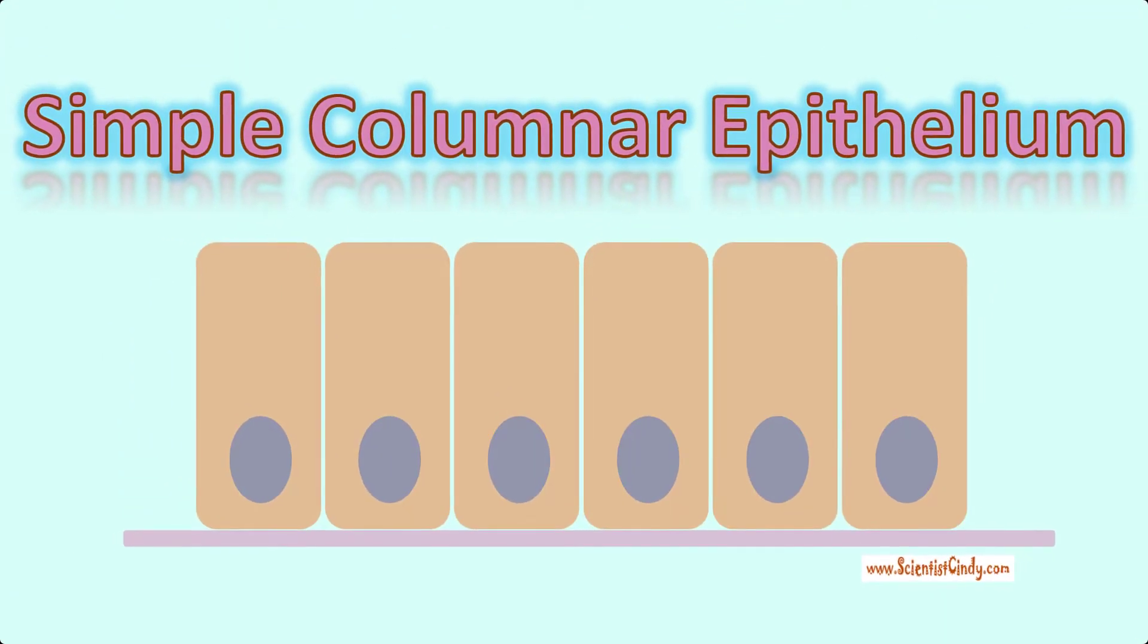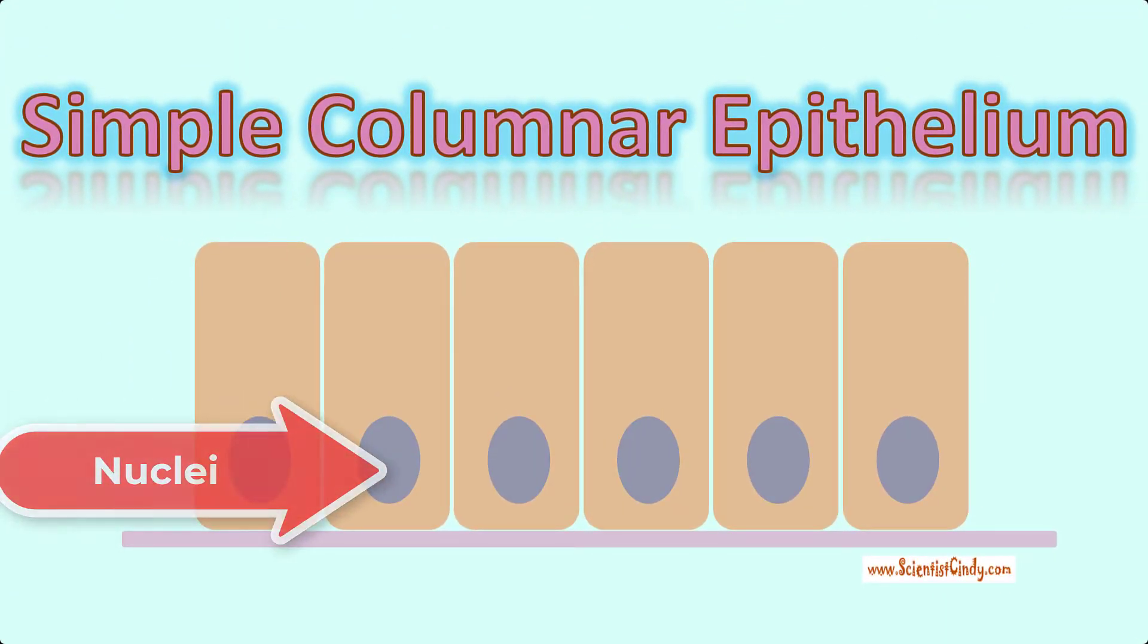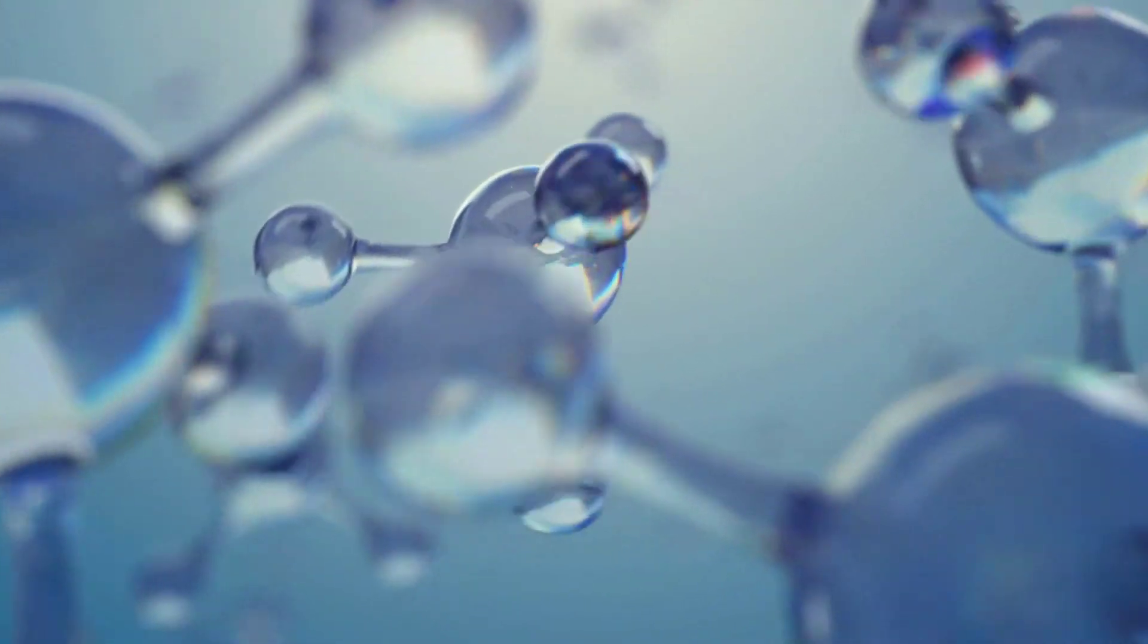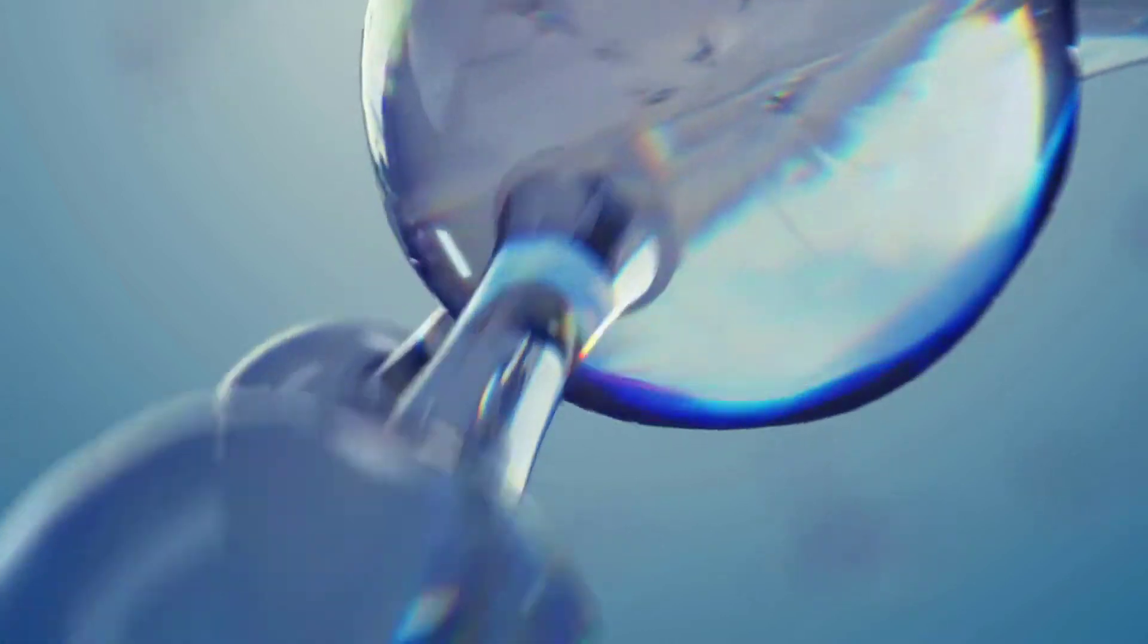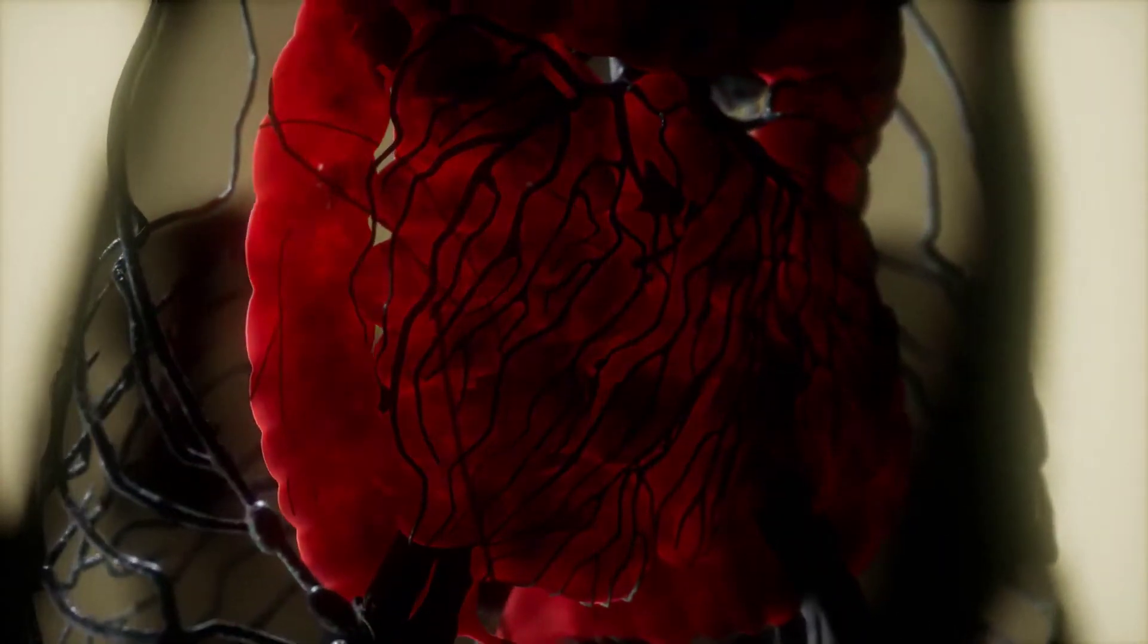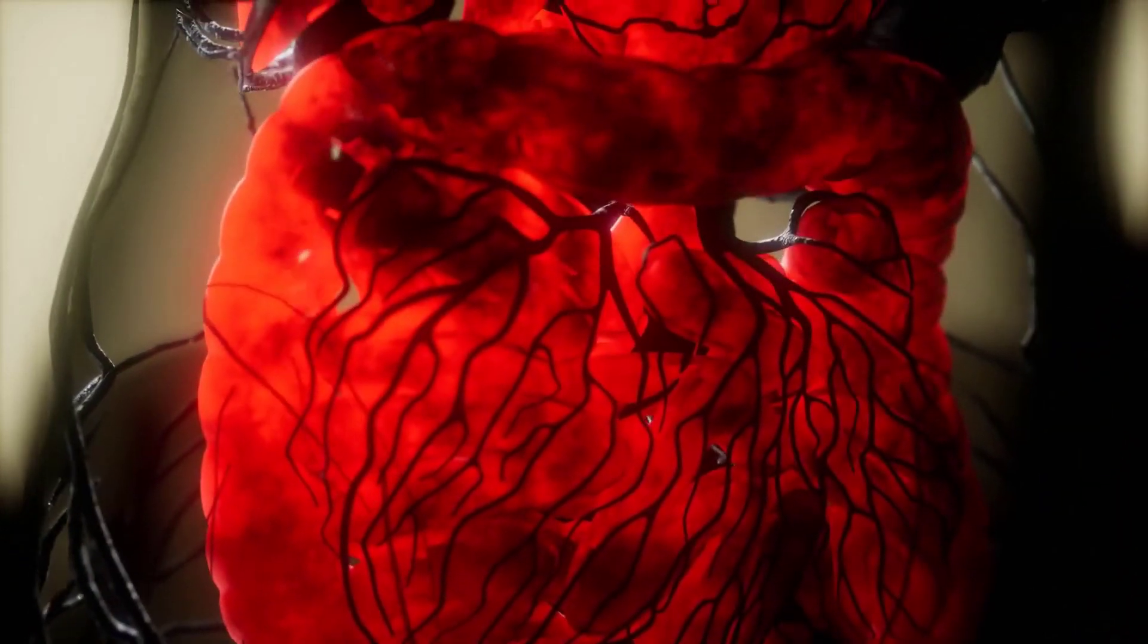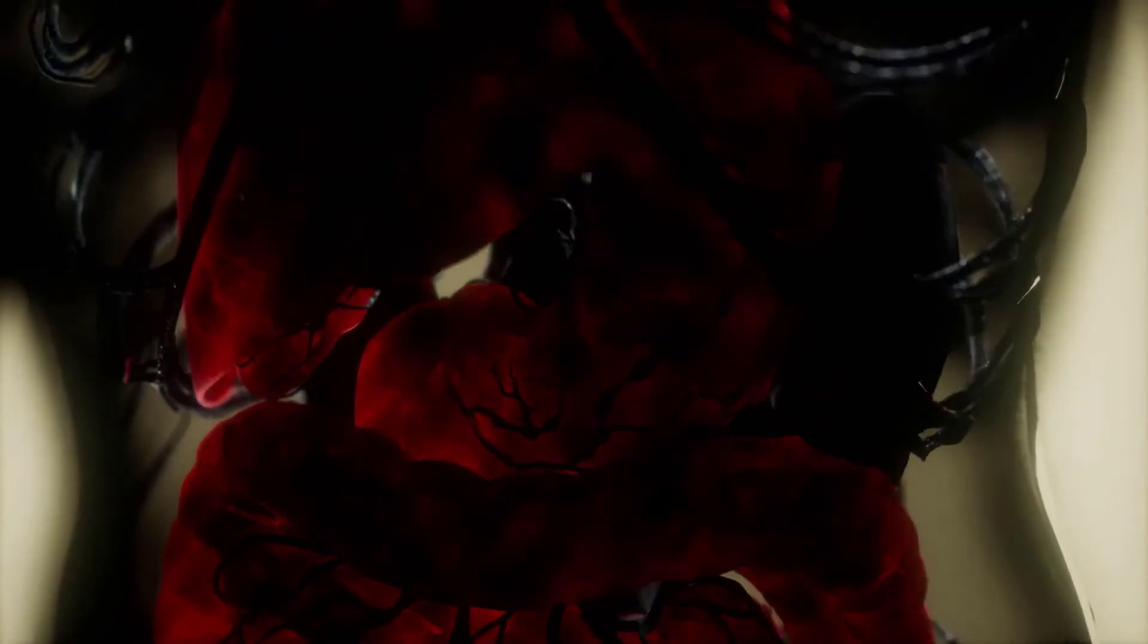In simple columnar epithelium, the nucleus of the tall column-like cells tends to be elongated and located at the basal end of the cells. Like cuboidal epithelium, this epithelium is active in the absorption and secretion of molecules.